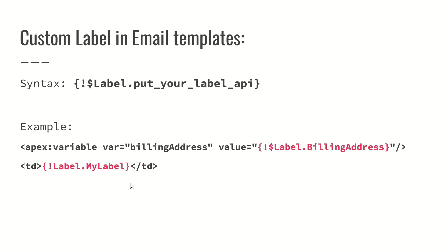That is all about custom labels — how to create them and what they are used for. Majorly they are used for translation of values. For example, if we have a greeting message 'hello' and a user is from Australia, it should appear in Australian English, and if the user is from Spain it should appear in Spanish. We can define translations for the custom label, and according to the user's native language it will be displayed accordingly to that particular user.